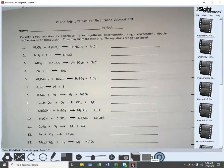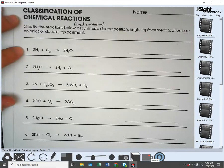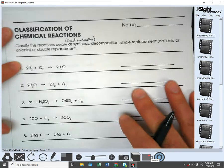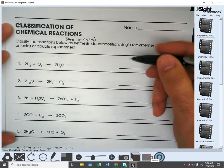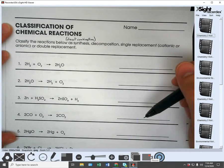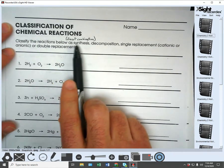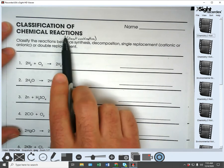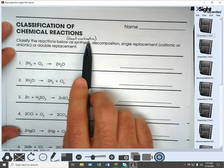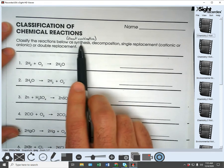All right. Hey guys. So this is your homework, the classification of chemical reactions worksheet here. You're going to classify the reactions below as synthesis. I put direct combination in quotes up here because you could use either one. I would use synthesis.